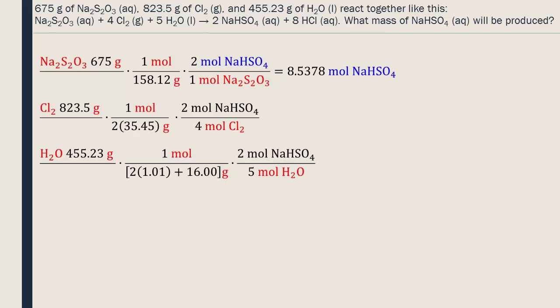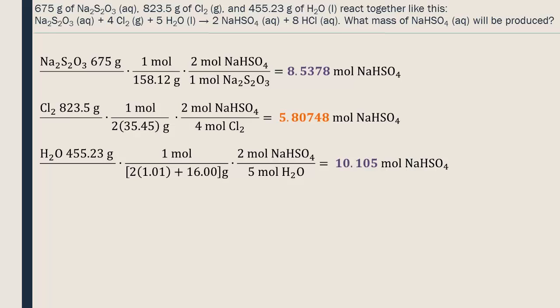The limiting reagent is determined by the smallest amount of NaHSO4 produced. The second reactant, the chlorine, can only produce 5.80748 moles of product, while our other reactants can produce more. So even if there's an excess of the other reactants, the reaction is limited by the chlorine, so it's the limiting reagent.